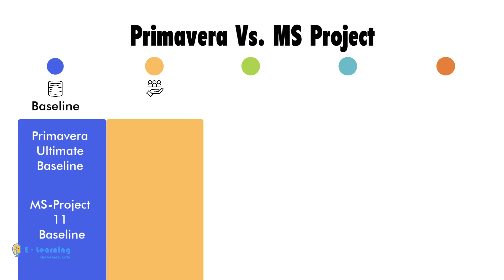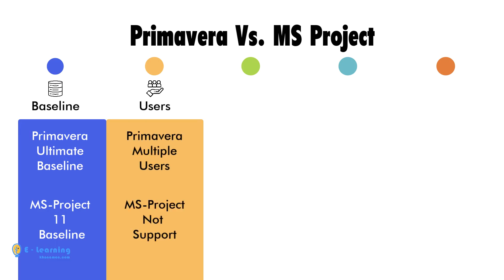In Primavera, multiple users can work on a single project, but in MS Project this feature is not supported.